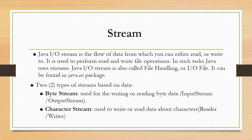Basically there are two types of streams: the byte stream and the character stream. The byte stream can be used for writing or reading byte data — the useful classes are InputStream and OutputStream. The character stream is used to write or read character data, and the commonly used classes are Reader and Writer.